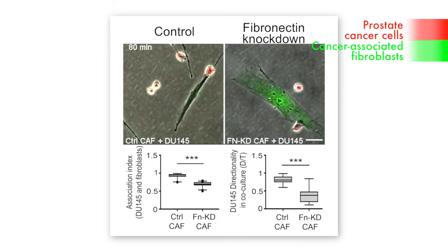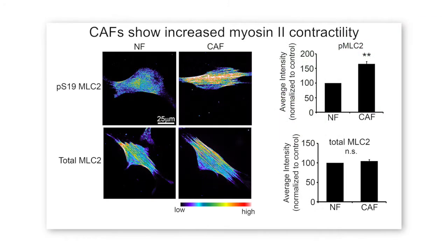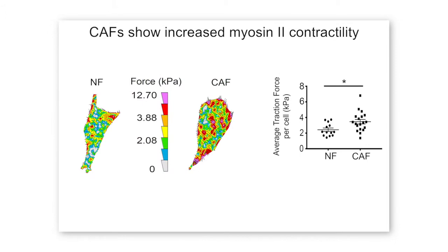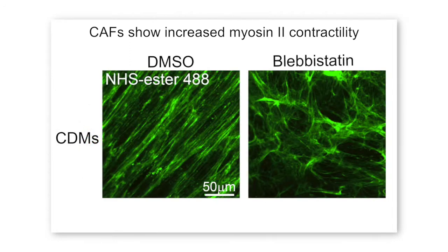But how do CAFs organise fibronectin into these parallel fibres? The researchers hypothesised that since CAFs are highly contractile cells, they may be exerting higher forces on fibronectin, leading to its alignment. Using traction force microscopy, they saw that CAFs exert increased forces compared to normal fibroblasts — about a 50% increase when attached to fibronectin. Blocking myosin-2, which is responsible for cellular contractility, using blebbistatin resulted in complete disruption of the aligned matrix organisation into a more disorganised, random arrangement.